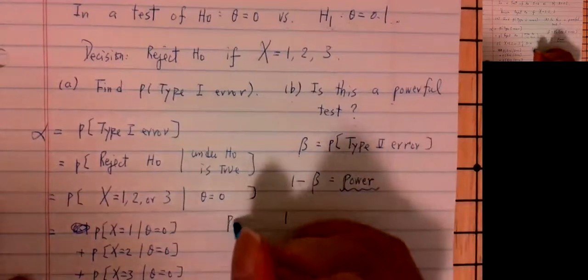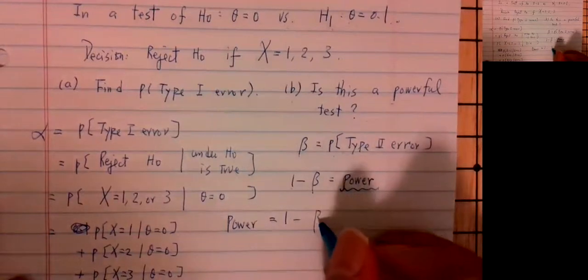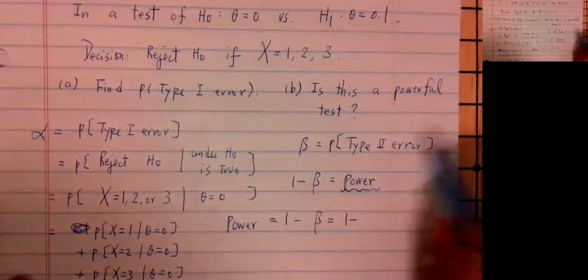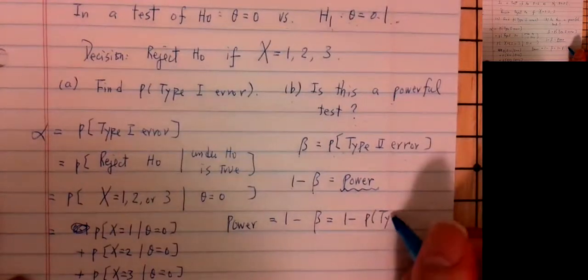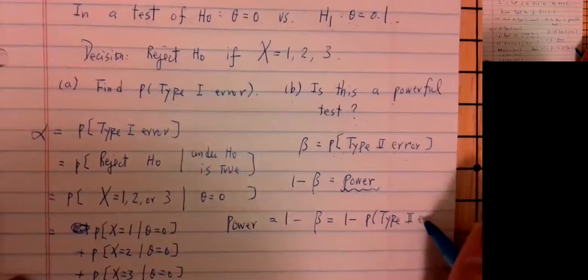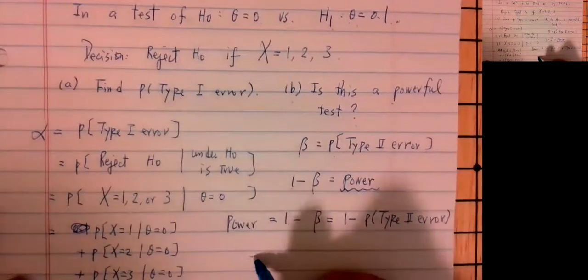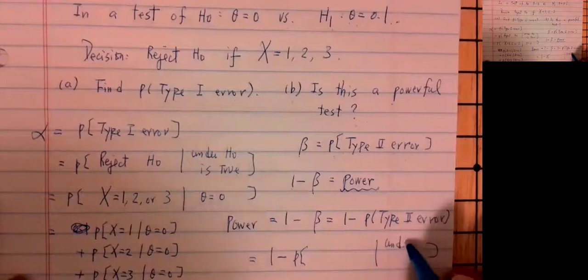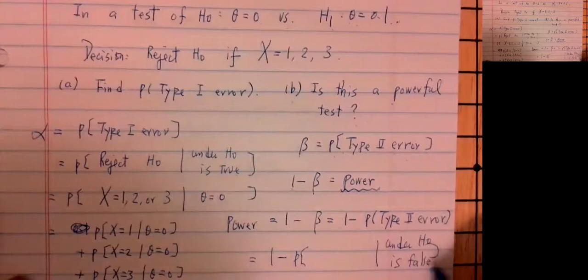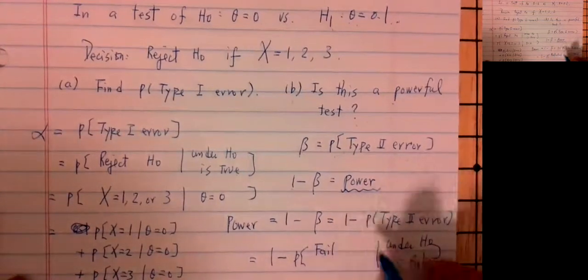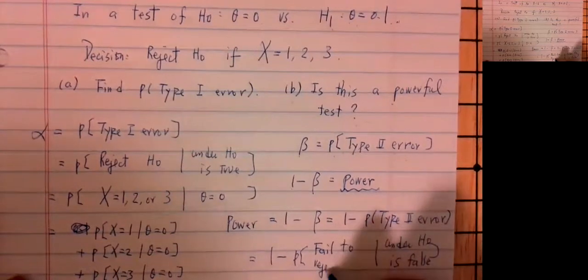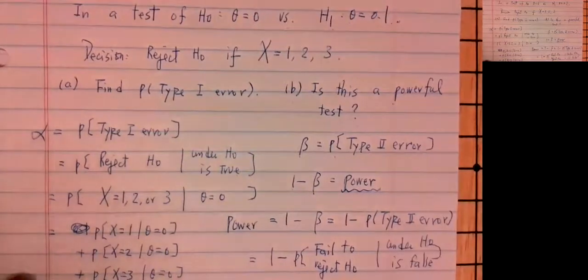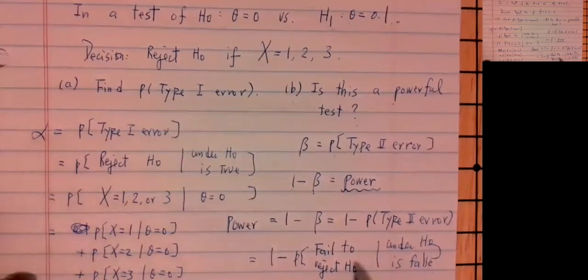Power is equal to 1 minus beta. Beta is the probability of making a type 2 error, which is defined as: under H-naught is false, but you retain H-naught — you fail to reject H-naught. You should have rejected H-naught but failed to do so; therefore, that's a mistake.